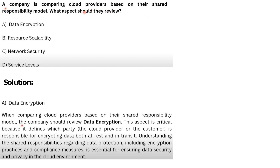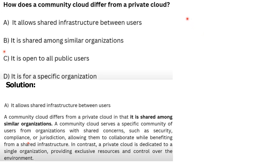Next question: A company is comparing cloud providers based on their responsibility model. Which aspect should they review? Options: Data encryption, Resource scalability, Network security, Service levels. The correct answer is Data encryption.